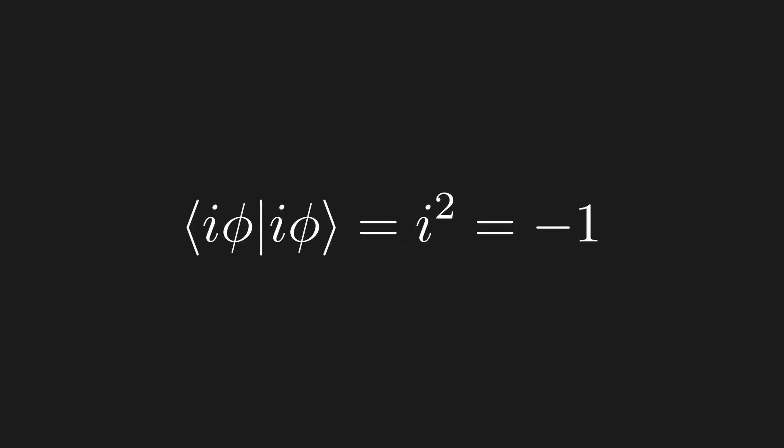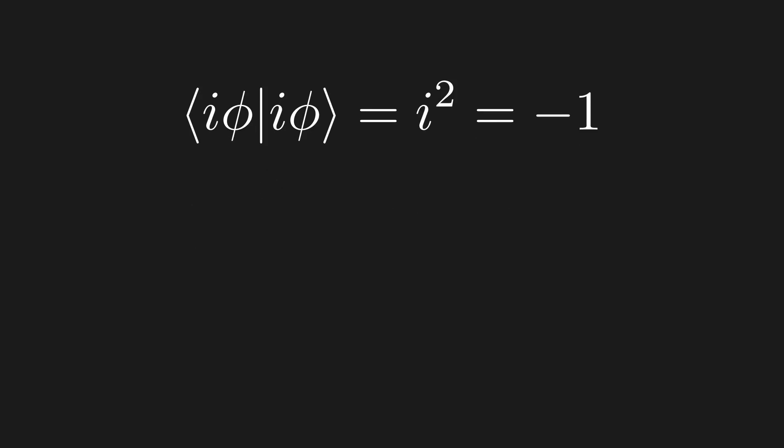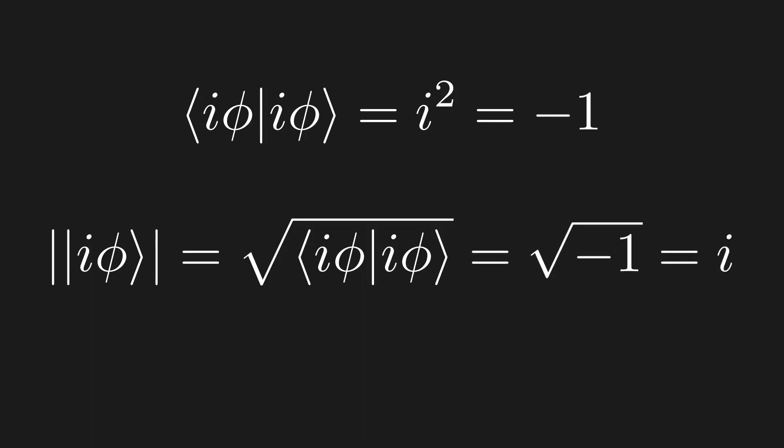And remember that we assume the inner product equaled 1. Thus, we get that the new inner product is equal to negative 1. But this is a problem. Remember that we wish to define the length of a vector as the square root of the inner product with itself. In this case, we get an imaginary length, which doesn't make sense.